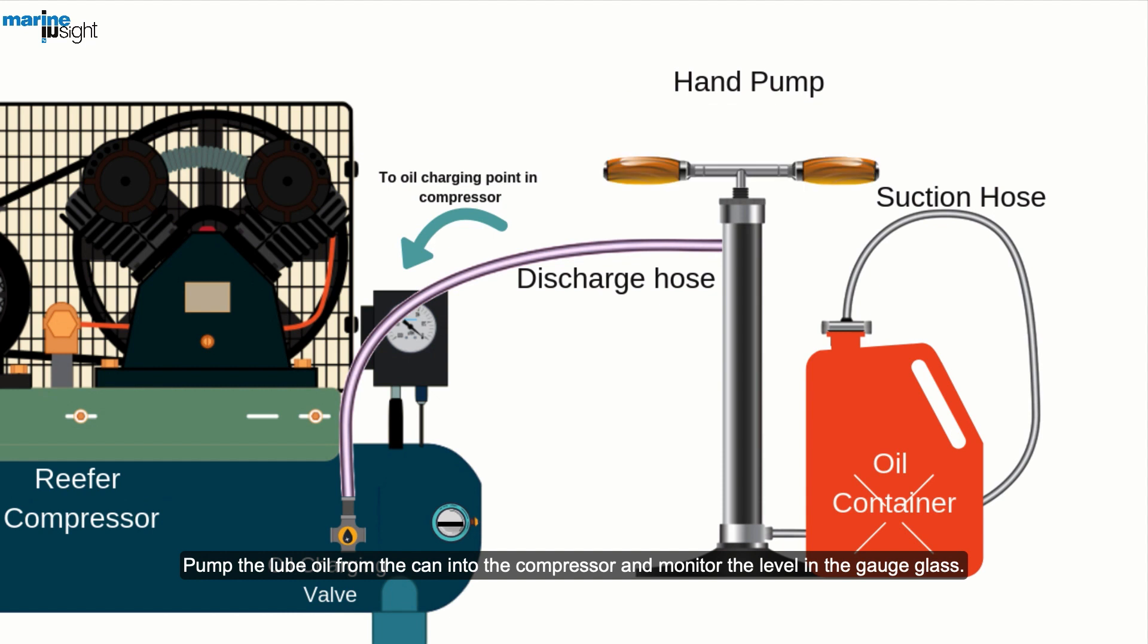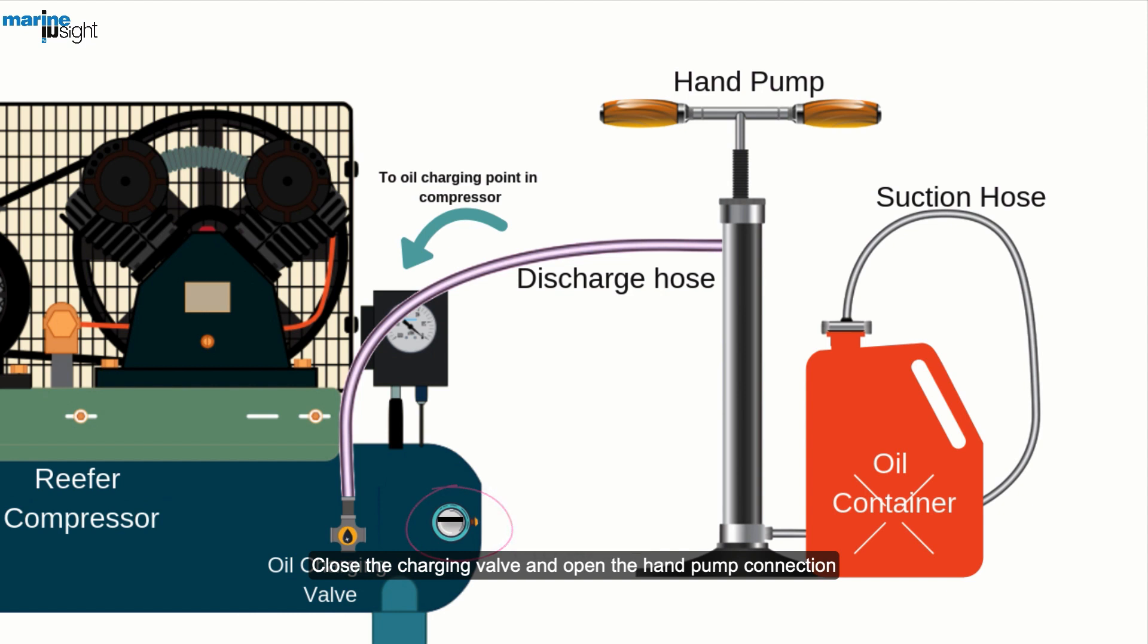Pump the lube oil from the can into the compressor and monitor the level in the gauge glass. Close the charging valve and open the hand pump connection.